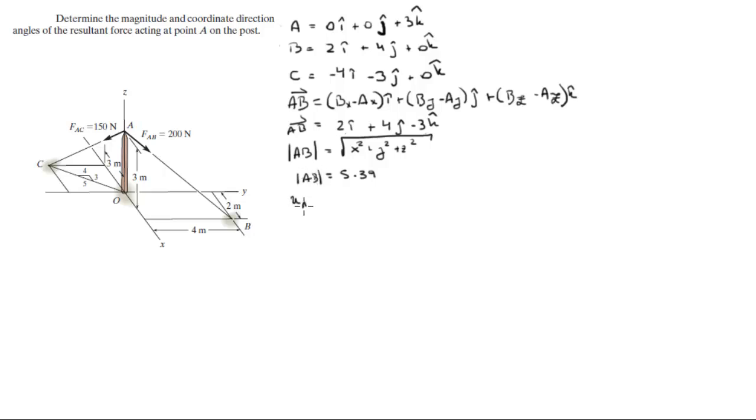To find the unit vector AB, in other words the unit vector with a value of 1 right here, you do the vector AB divided by the magnitude. Dividing each of the values by the magnitude will give you the unit vector which comes out to be 0.371i plus 0.742j minus 0.557k.